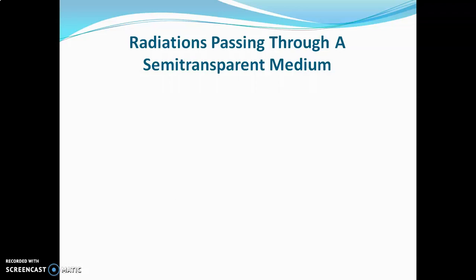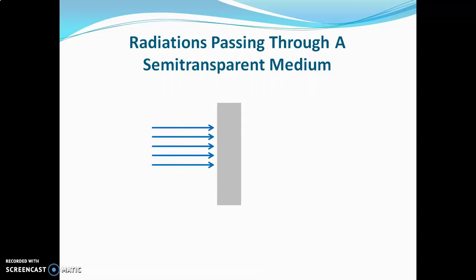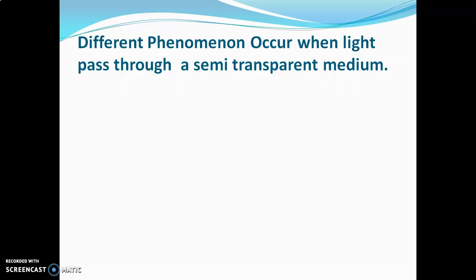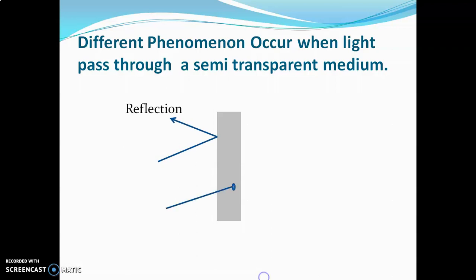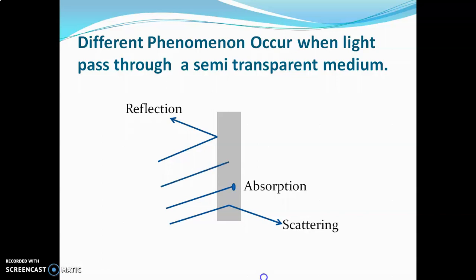What happens when electromagnetic radiation or light passes through a semi-transparent medium? Here light means any light such as sunlight or light from an incandescent bulb. When such light passes through a semi-transparent medium, the light intensity is reduced. When light passes through a semi-transparent medium, some rays get reflected back, some rays get absorbed in the medium, some rays get scattered, and the remaining radiations get transmitted. Due to reflection, absorption, and scattering of light, the amount of transmission is reduced.